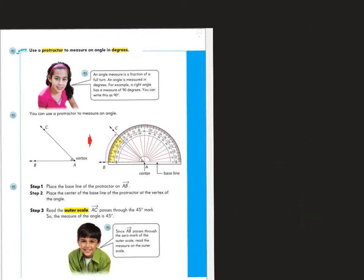Most of the time you don't have that full circle there to picture when you're looking at an angle. A lot of times you're just going to see that piece of a full turn — that angle by itself. Like we've looked at before, those examples where you have two rays that meet up at that common endpoint, which is called the vertex. When you have an angle by itself, you can use a protractor to help you measure it.